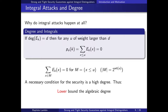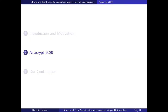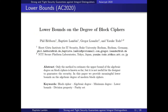A necessary condition for a block cipher to be immune to integral attacks is to have a high degree. Estimating the degree is not easy; obtaining upper bounds is well-known, but proving security requires lower bounds on the algebraic degree. This was considered quite hard until last year at AsiaCrypt 2020, where the same authors showed how to compute lower bounds on the degree of block ciphers, along with some stronger notions. Our work this year strongly relies on the techniques introduced in that paper.